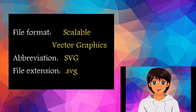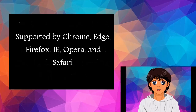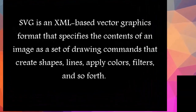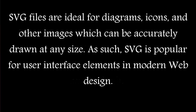Sixth, Scalable Vector Graphics (SVG) — a vector image format ideal for user interface elements, icons, diagrams, etc., that must be drawn accurately at different sizes. Supported by Chrome, Edge, Firefox, IE, Opera, and Safari. SVG is an XML-based vector graphics format that specifies image content as a set of drawing commands that create shapes, lines, apply colors, filters, and so forth. SVG files are ideal for diagrams, icons, and other images that can be accurately drawn at any size. SVG is popular for user interface elements in modern web design.